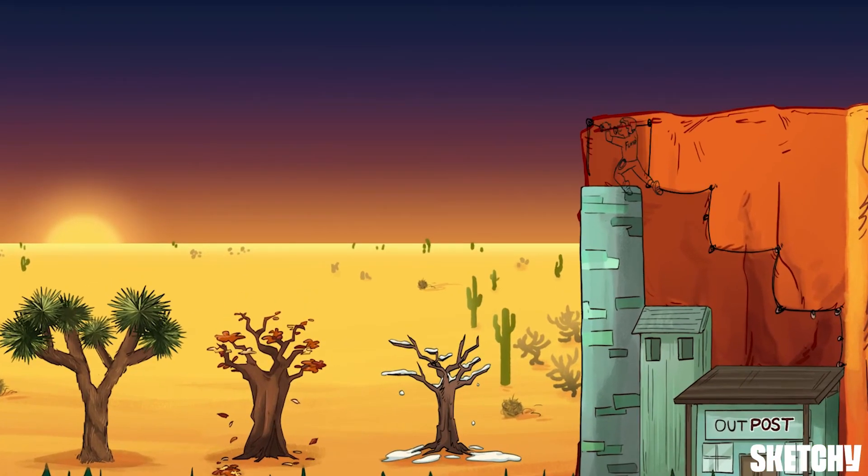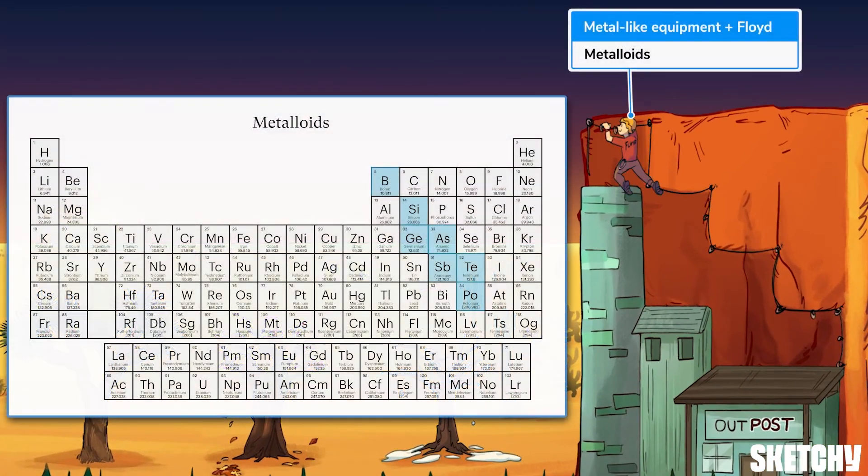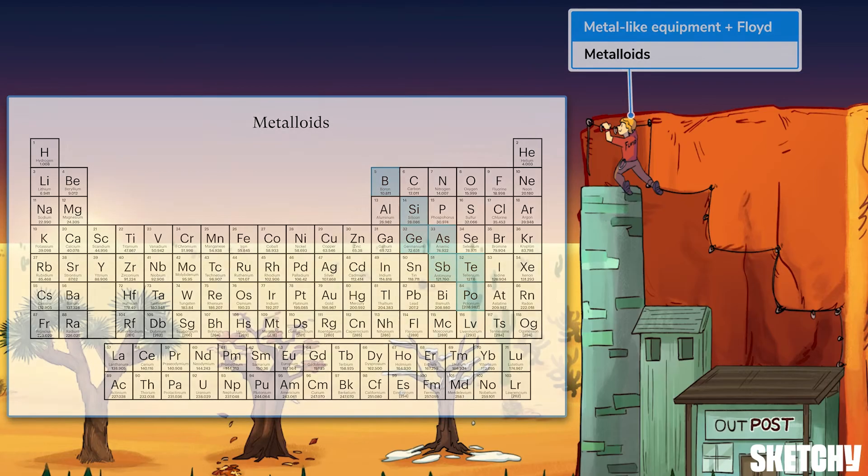Okay, moving to the right, Floyd's climbing rope has outlined the shape of metalloids on the periodic table. As the name suggests, these elements have some characteristics of metals and some characteristics of non-metals. Hence, Floyd's metal like silicon climbing equipment. Metalloids are semi-conductive, and they're more brittle than metals, but less brittle than non-metals.